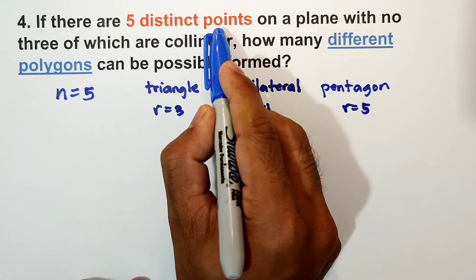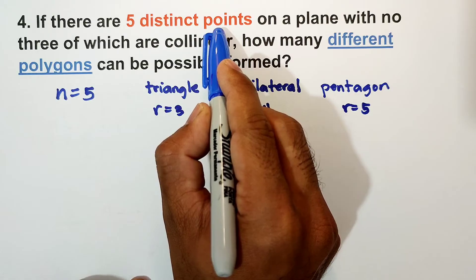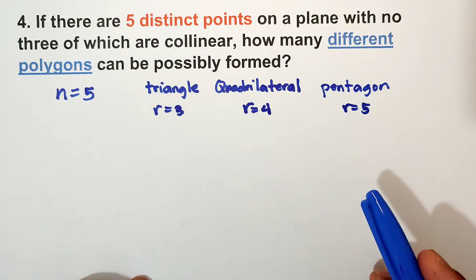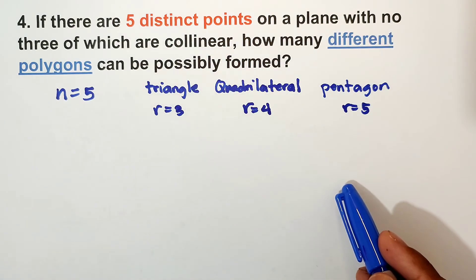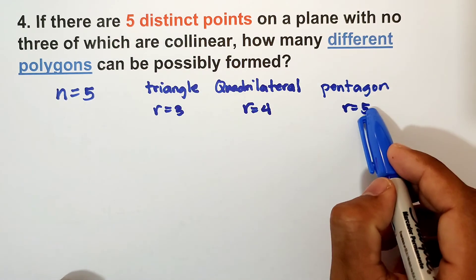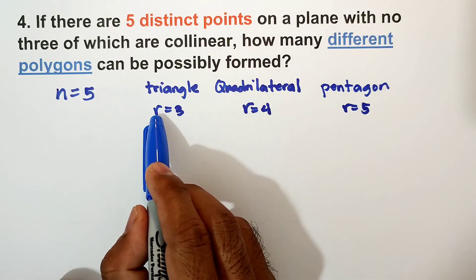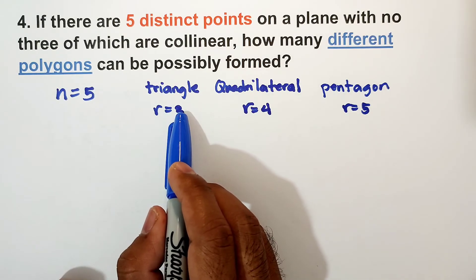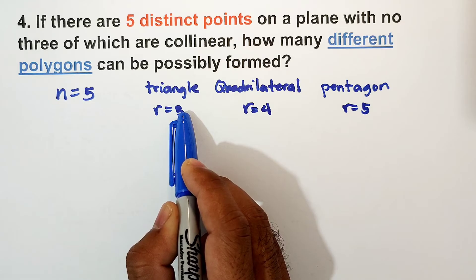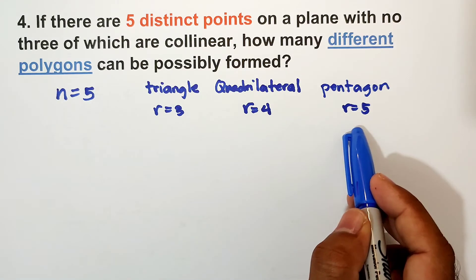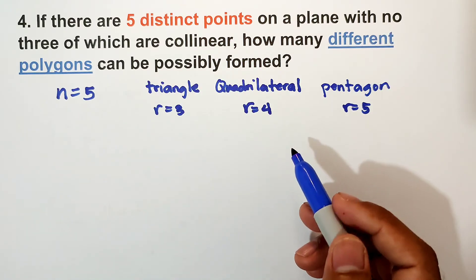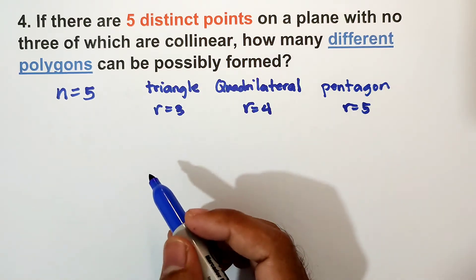We cannot form a hexagon — that would need six vertices and six points to connect. Since we only have five points, the maximum is pentagon. The smallest polygon we can form is a triangle by connecting three points. That's why R is three, four, and five respectively.